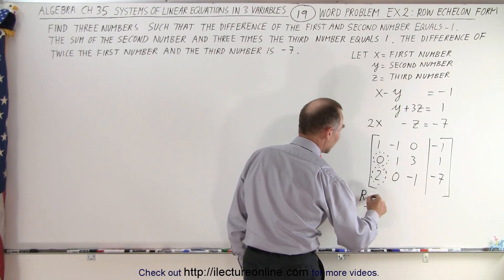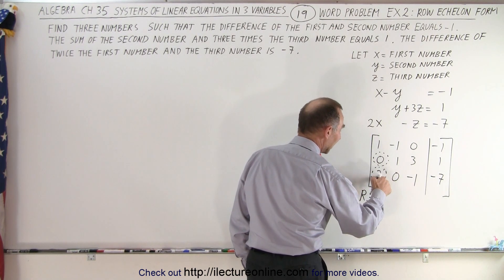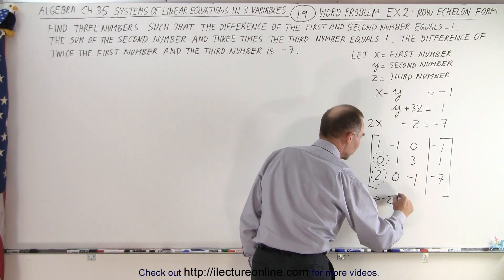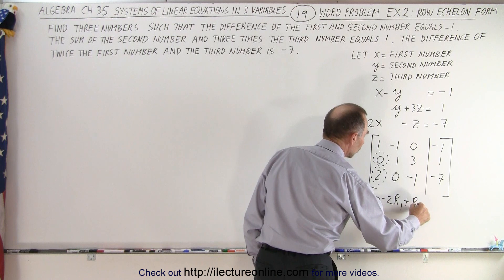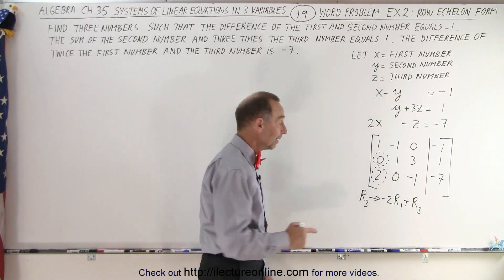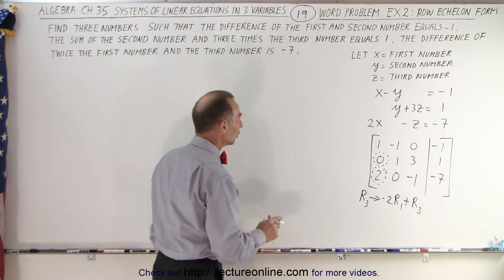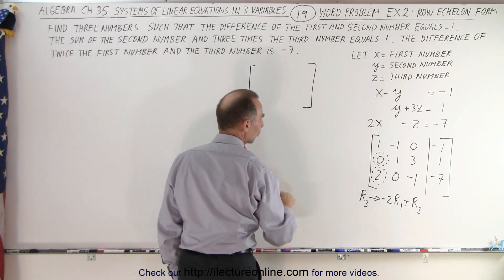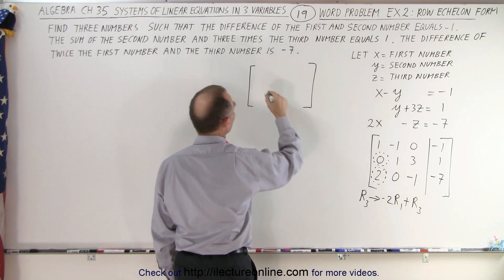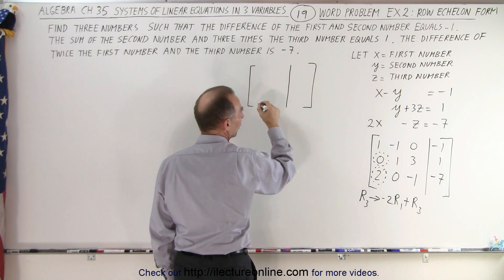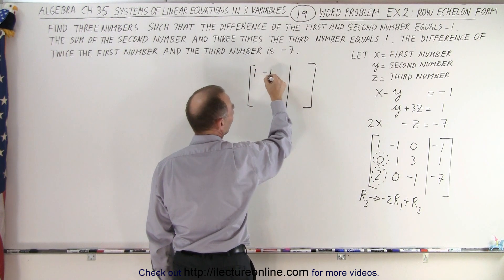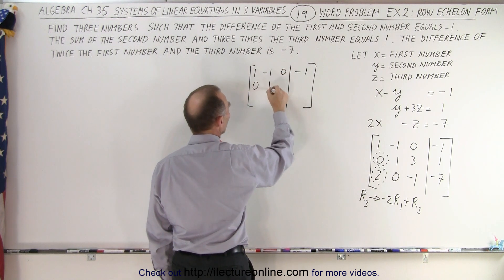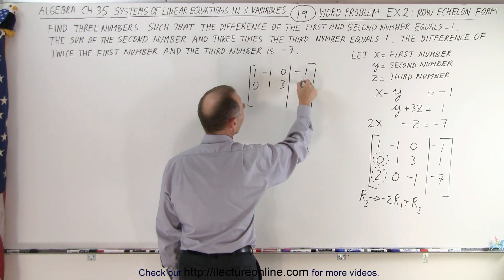Then we want to turn the entry below the first pivot into a zero. That position is already a zero, so we don't have to do anything there. But we do need to turn the entry in the third row into a zero. To do that we take row three and replace it by negative two times row one added to row three. When we do that, that entry will turn into a zero. Row one and row two do not change, so we have: row one stays as one, negative one, zero, negative one; row two stays as zero, one, three, one.